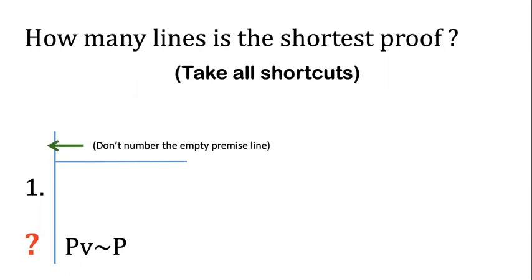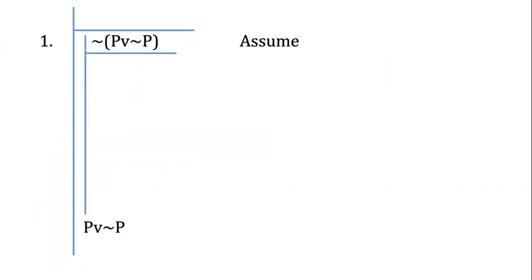That was your chance to pause your videos. Let's talk about the answer. The first thing that I do in this proof is I assume the opposite of my conclusion. Here's the tip. Anytime you're trying to prove a tautology in bool, there's only one way to do it, to do it by reductio or negation intro.